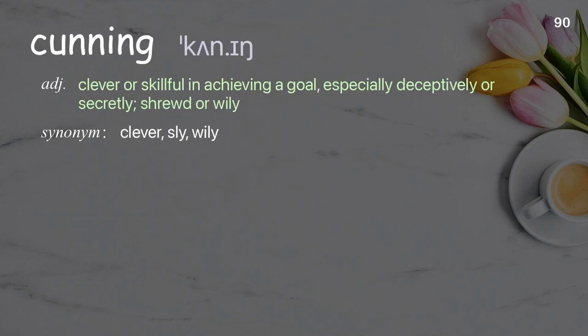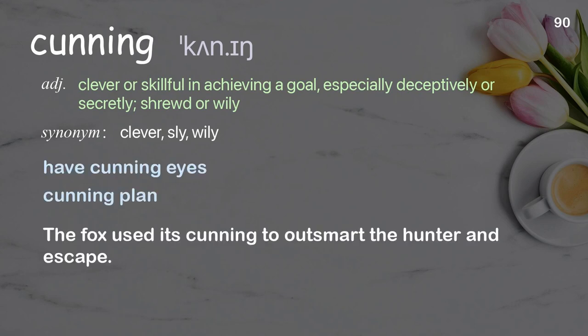Cunning: clever or skillful in achieving a goal, especially deceptively or secretly; shrewd or wily. Examples: have cunning eyes, cunning plan. The fox used its cunning to outsmart the hunter and escape.